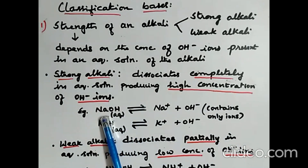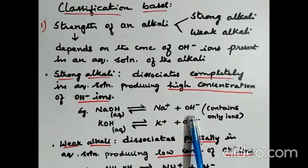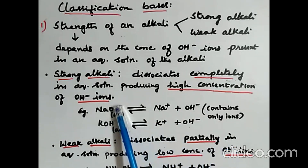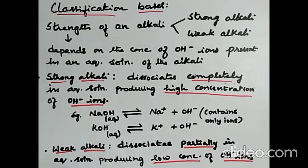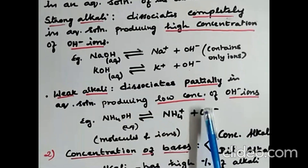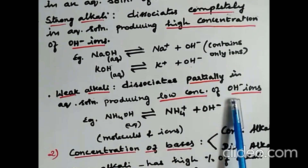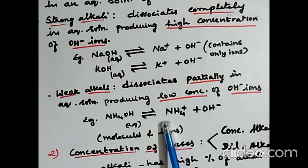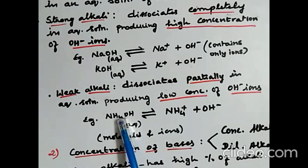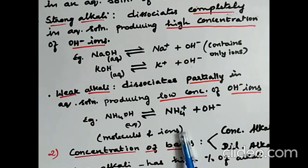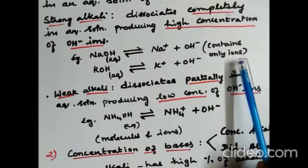All the molecules of sodium hydroxide dissociate to produce Na+ and OH− ions, so mostly only ions are present in solution. KOH in aqueous solution also produces K+ and OH− ions — complete dissociation producing large numbers of hydroxyl ions. Weak alkalis dissociate partially in aqueous solution producing low concentration of hydroxyl ions. In a weak alkali solution you find molecules and ions, whereas in a strong alkali solution you find only ions.